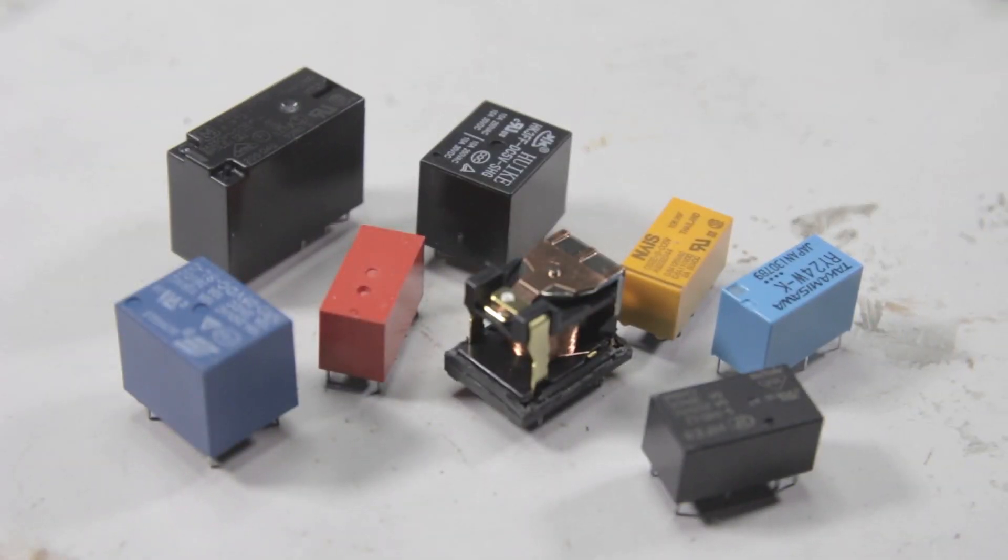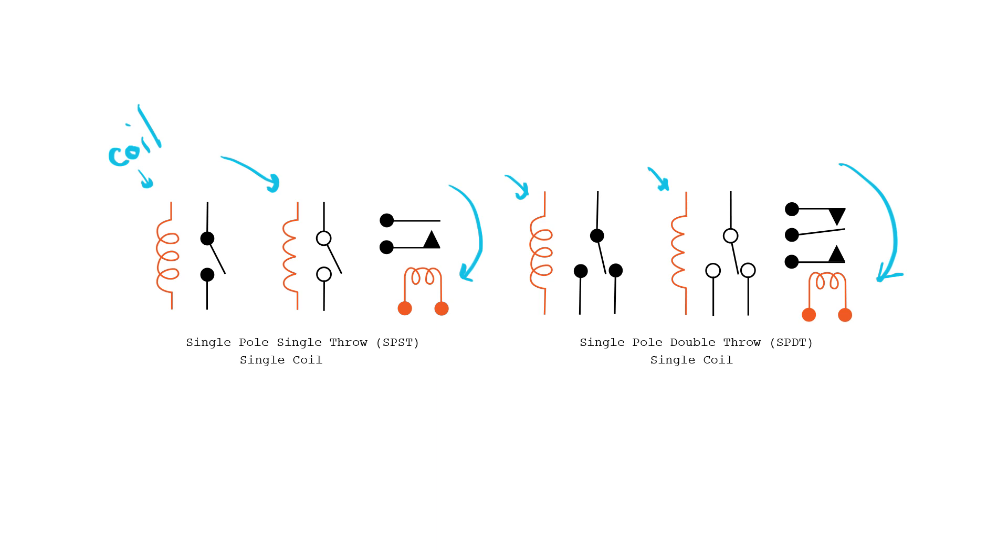Today we'll look at relays. A relay is basically a switch, an electromagnetic switch. These are some common schematic symbols of single pole single throw relay and single pole double throw relay. The schematics represent the coil of the relay and at least a pair of switching contacts.